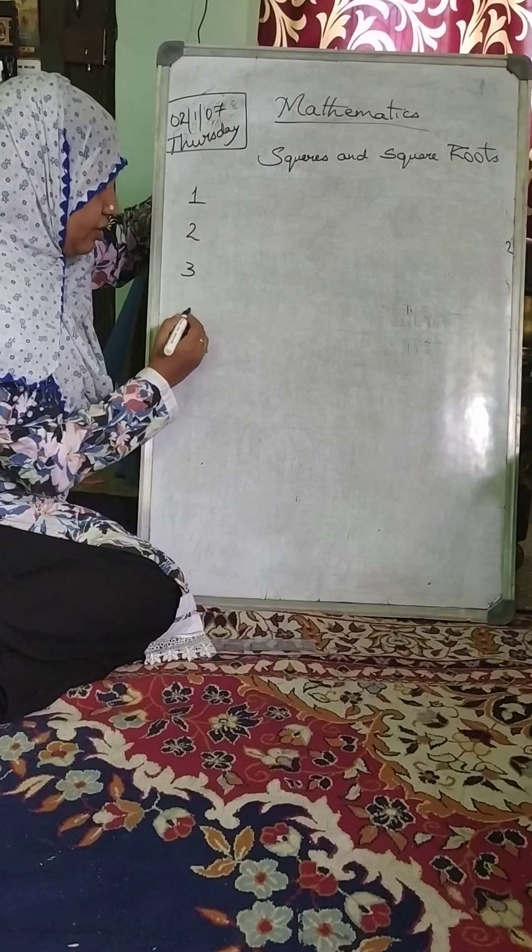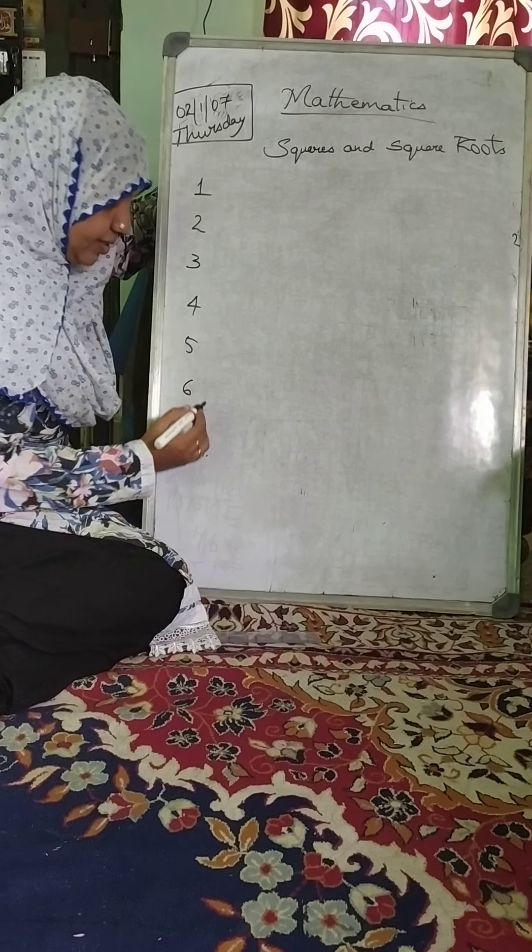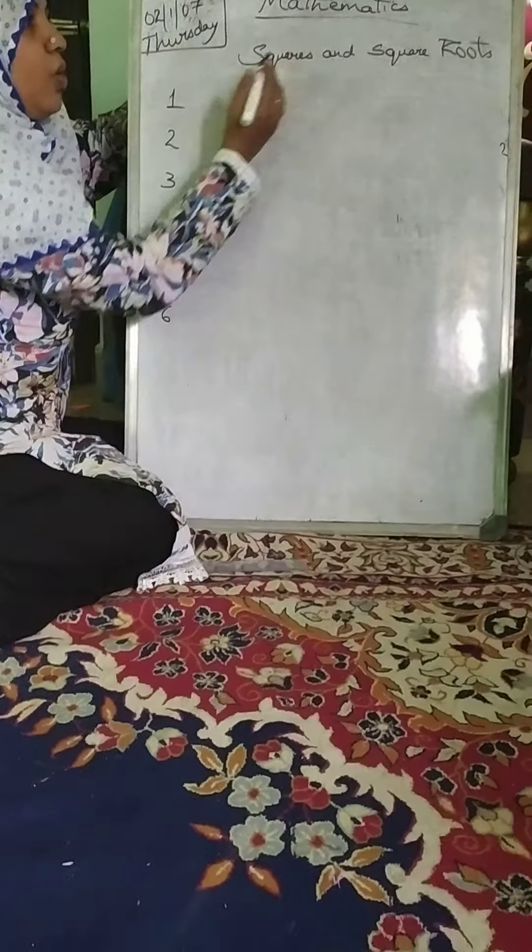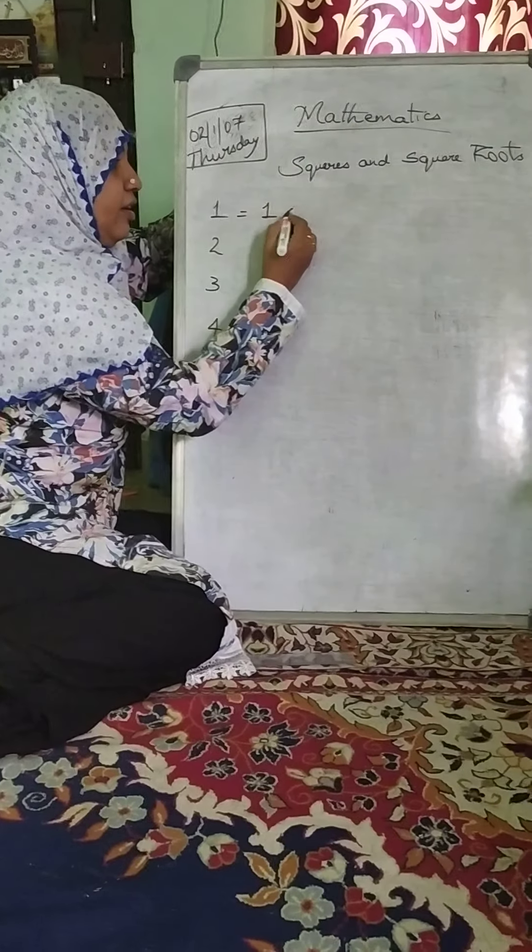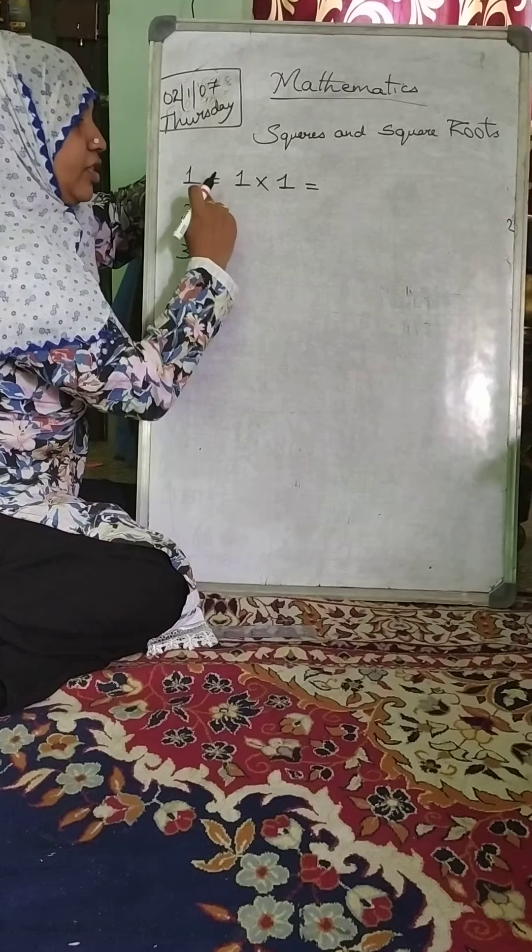1, 2, 3, 4, 5, 6, 7, 8, 9, 10 and so on. So what do you mean by square and square root? Square is a number when you multiply by itself it is known as square.